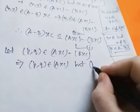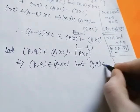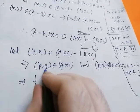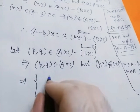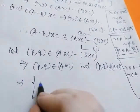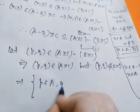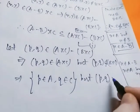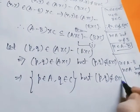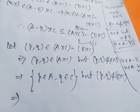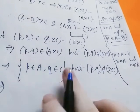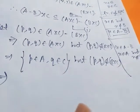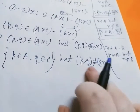Let ordered pair (p, q) belong to (A cross C) minus (B cross C). This means ordered pair (p, q) belongs to A cross C but ordered pair (p, q) does not belong to B cross C. Since (p, q) belongs to A cross C, by definition of Cartesian product we have p belongs to A and q belongs to C. But ordered pair (p, q) does not belong to B cross C.